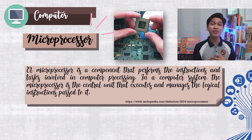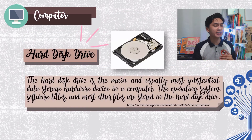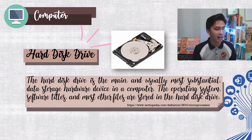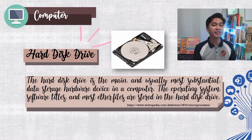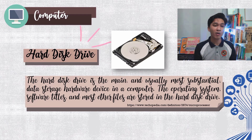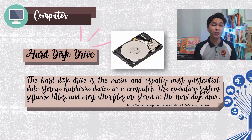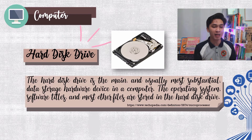We have the hard disk drive. The hard disk drive is the main and usually most substantial data storage hardware device in a computer. The operating system, software titles, and most other files are stored in the hard disk drive, commonly called the hard drive or hard disk. It is a non-volatile storage device which stores digitally encoded data on rapidly rotating platters with magnetic surfaces.